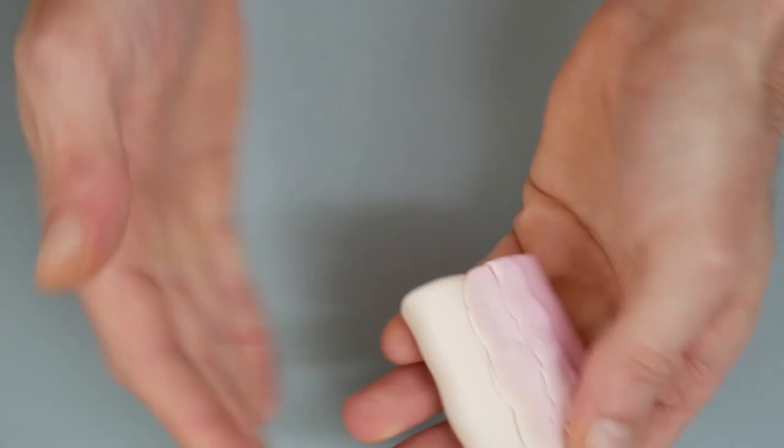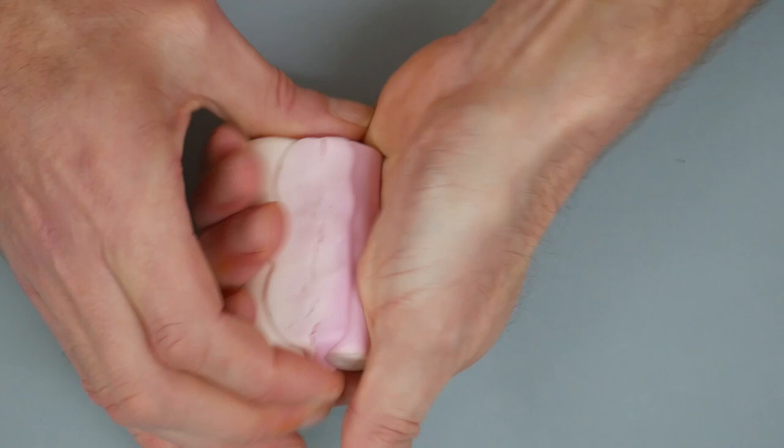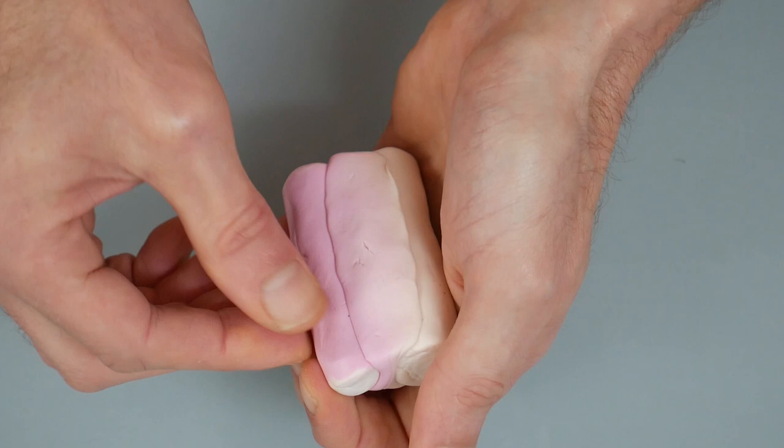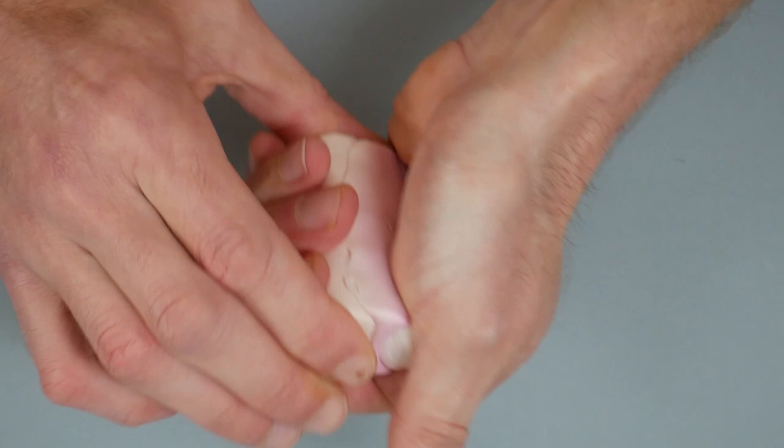Now we compress the whole thing, erase these edges by pulling them over, and make the whole thing into a nice and round cane.